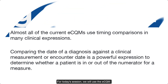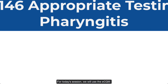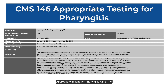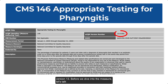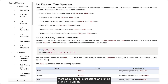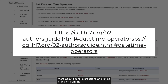For today's session, we will use the eCQM Appropriate Testing for Pharyngitis, CMS146 version 13. Before we dive into the measure, let's talk more about timing expressions and timing precision from the CQL specification.